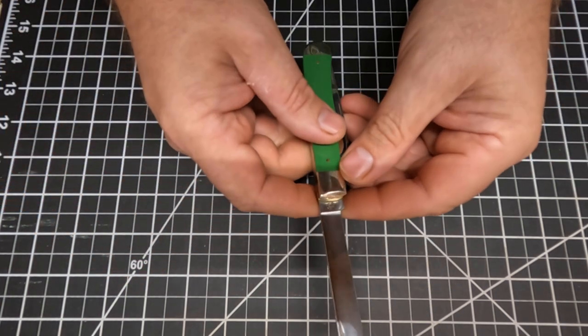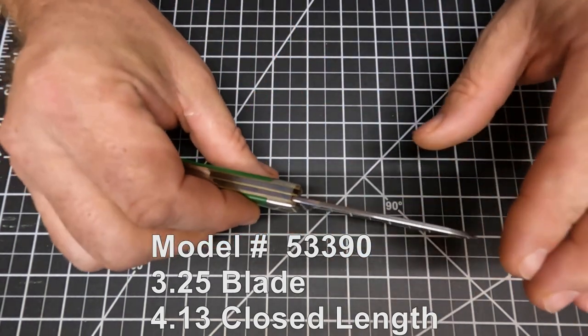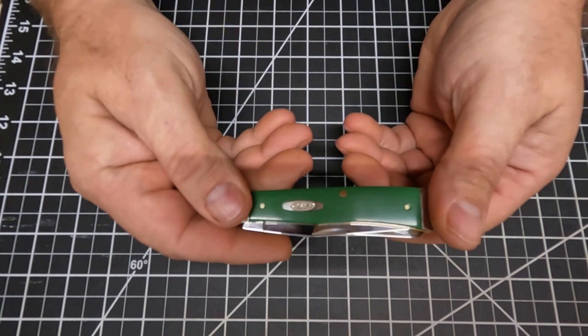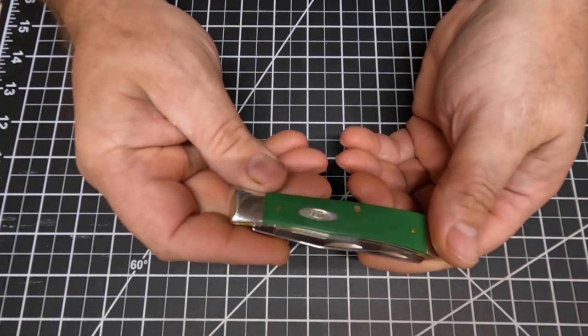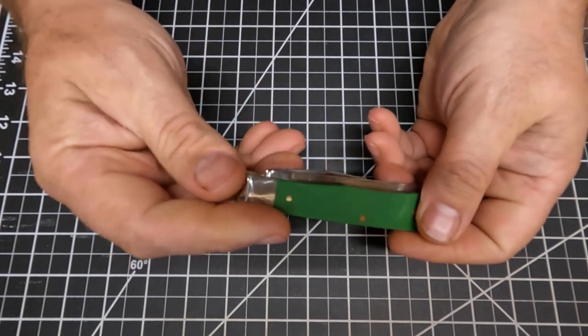And the model number is 4254, and this knife is made in the United States as well as the other case knives I'm assuming. Just a really nice case trapper knife.